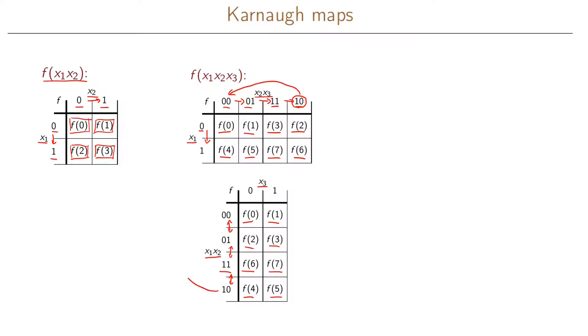And remember that the Gray coding has to be cyclic. So there is only one variable changed from the last row to the first row here as well.